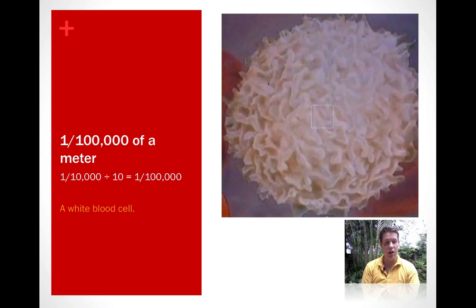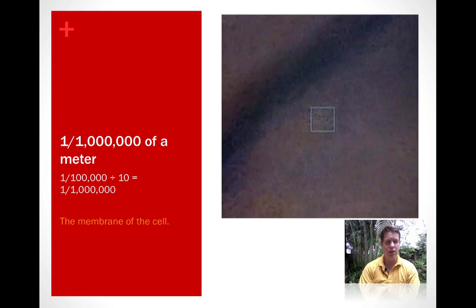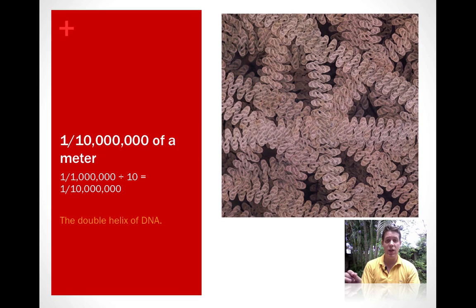If we take 1/100,000 of a meter and divide that by 10, then we get 1/1,000,000 of a meter. And we just see a bit of the membrane or the cell wall of that white blood cell. If we take 1/1,000,000 of a meter and divide it by 10, we get 1/10,000,000 of a meter. And we just see some of the DNA, the genetic code that makes you you and me me. We can start to see that floating around in the cell.